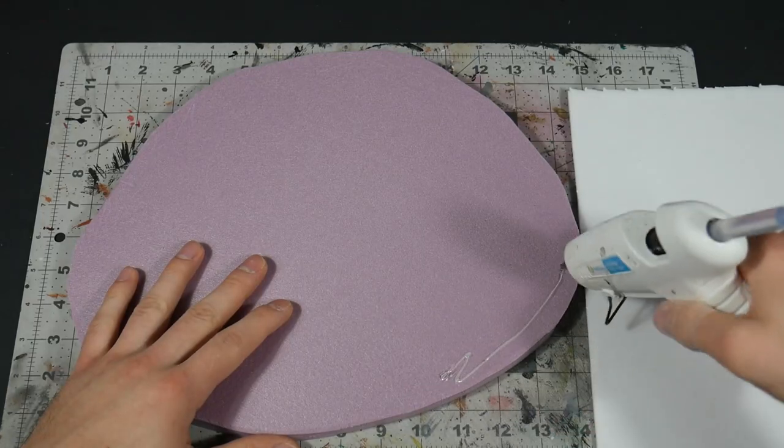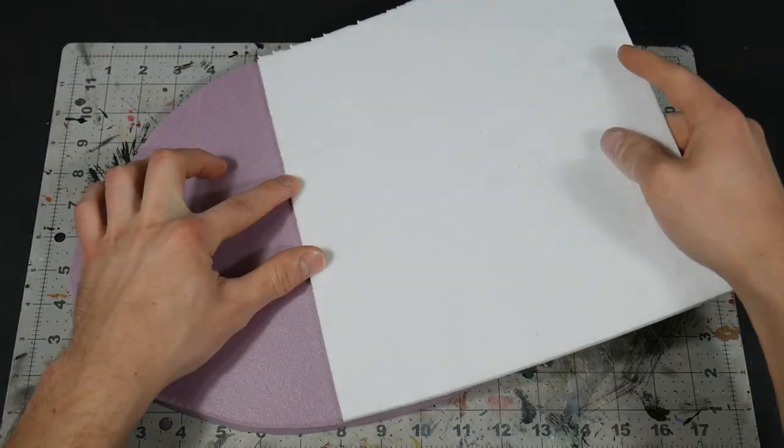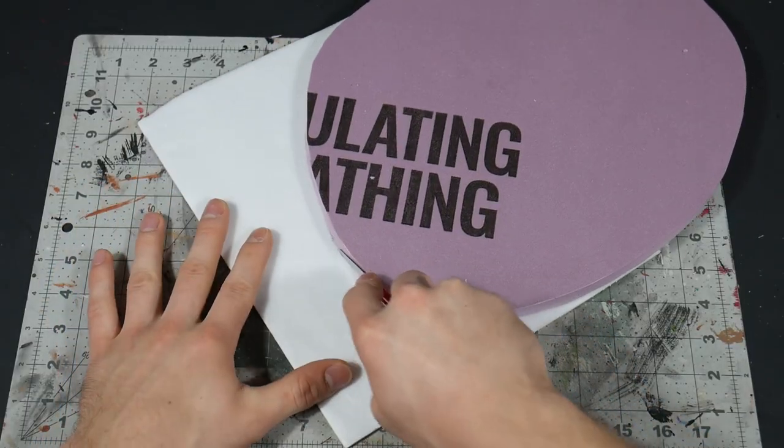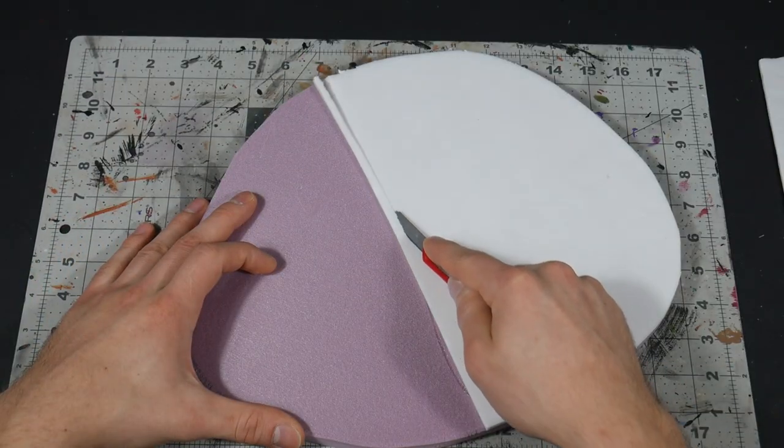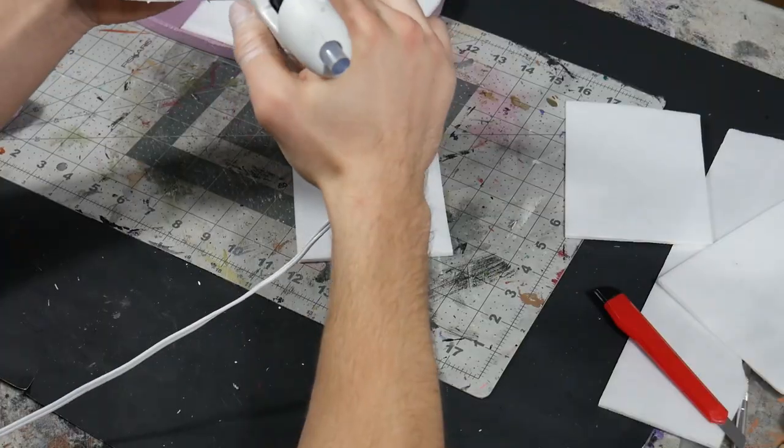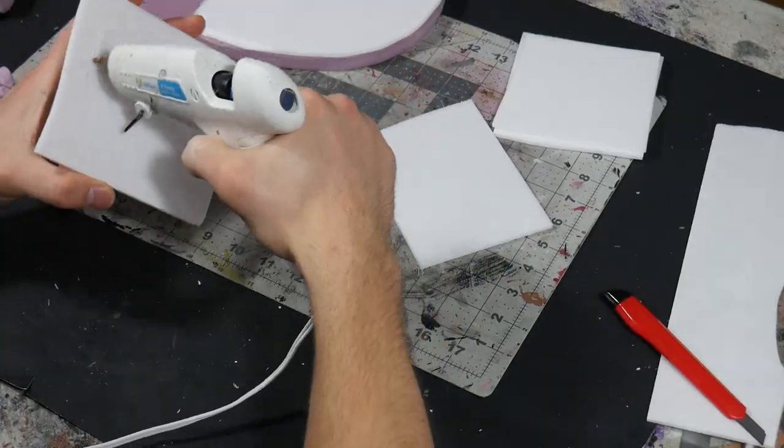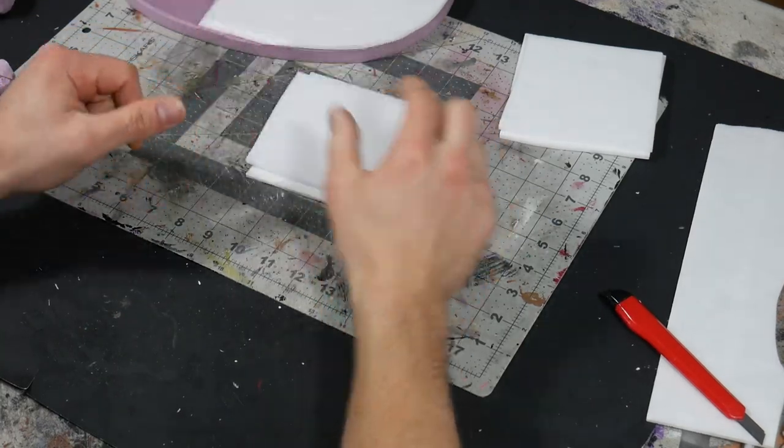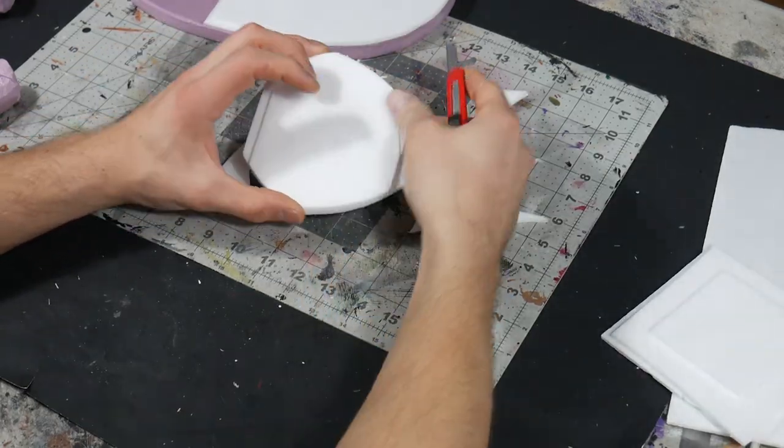Now we're adding in a little bit of a terrain height difference with some dollar store foam here. And I'm just cutting away and beveling it. Now I'm stacking up a few of these cheap dollar store squares that I cut out and shaping them a little bit.